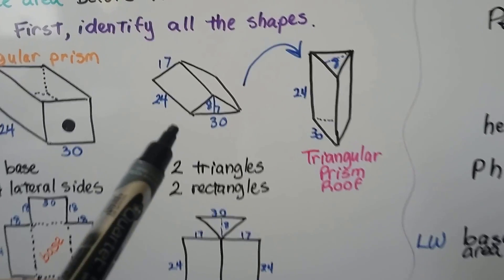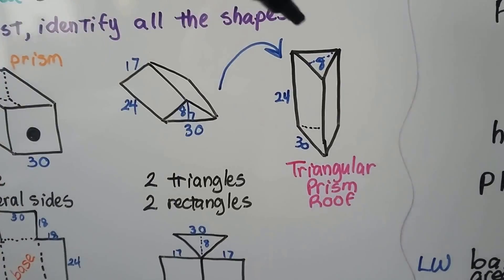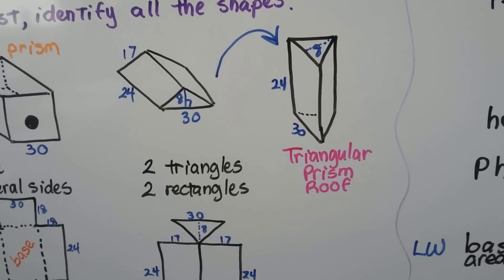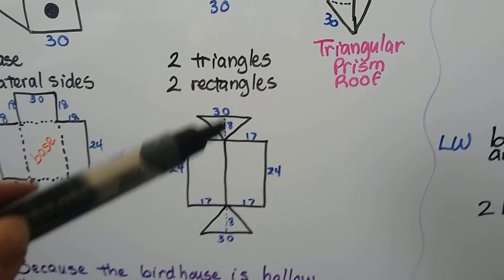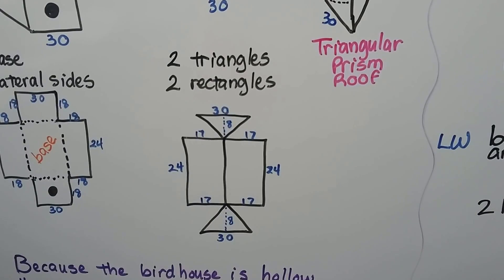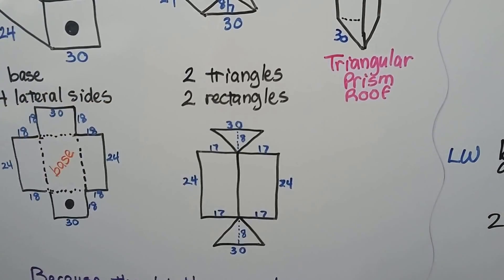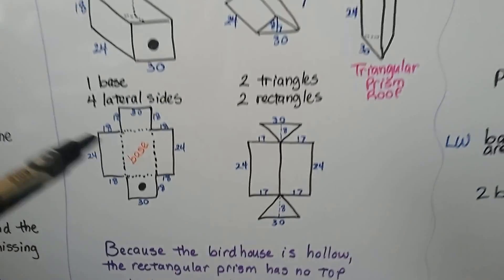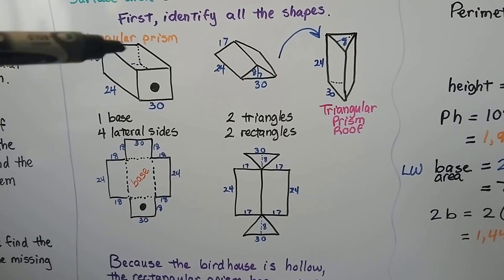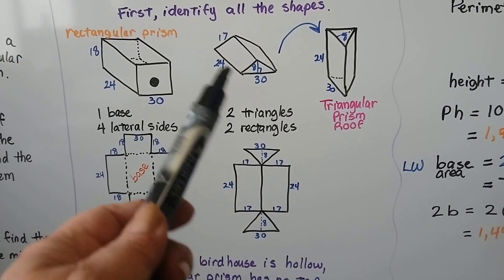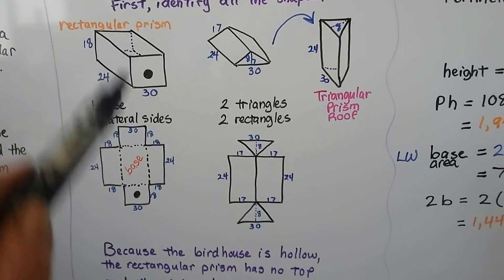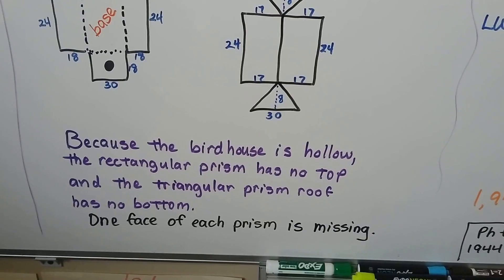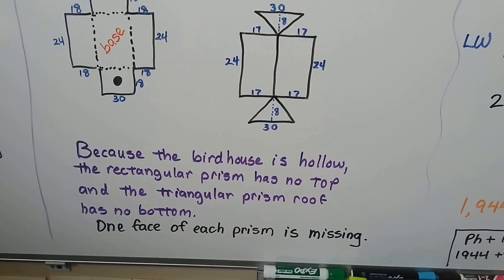For the roof, it's actually a triangular prism. If we picked it up and turned it on its side so it's sitting on one of the triangles as a base, then its height would be 24. We could find the area of a triangular prism — it's basically two triangles and two rectangles. Because the birdhouse is hollow, the birds have to get inside, so it's empty inside. There's no top on the rectangular prism, and the roof has no bottom — because it's hollow inside. So the rectangular prism has no top and the triangular prism roof has no bottom.